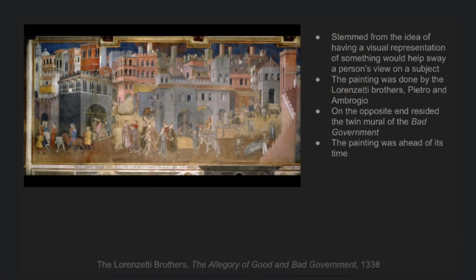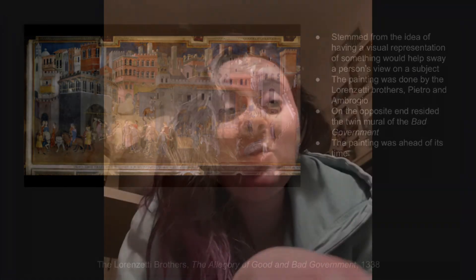This is the painting that Kellen is referring to. It was one part of a two-part mural that was put up in a legislative branch in the Pabellazzo Publico in Siena. It was meant to show what a prosperous economy would look like if legislators did their jobs.